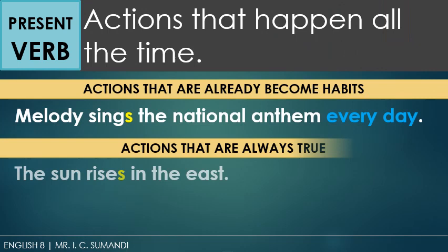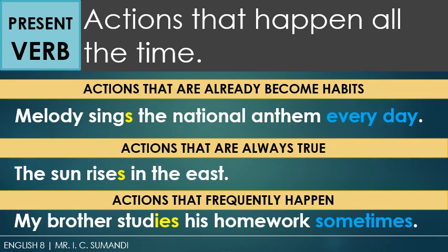Let's now proceed to the present timeline of verbs — the present tense. The idea here is very simple: the actions happen all the time. To make it simpler, I categorize the ideas into three. First, actions that have already become habits. Second, actions that are always true. And third, actions that frequently happen.